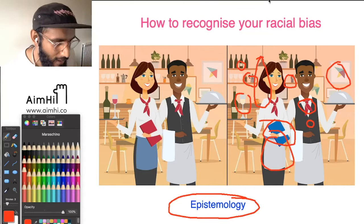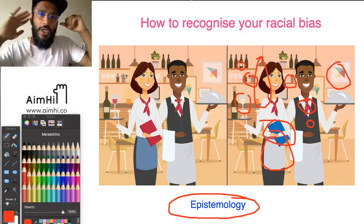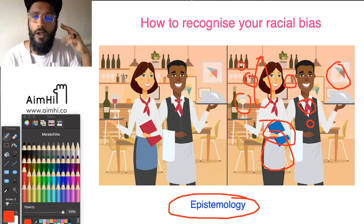Epistemology — if no one's heard of it, that's fine. Most people have no idea what this thing is. It's an area of philosophy to do more or less with the philosophy of knowledge and beliefs: how do you know that your beliefs are correct and true, and what do those words even mean when we talk about those things?